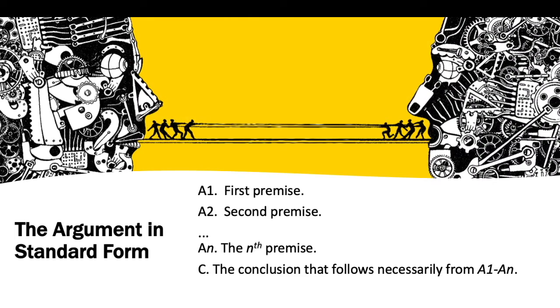If you put the argument in standard form, the result will look something like this. You're going to have the first premise, the second premise, and then the final premise in your argument leading up to the conclusion that follows necessarily from all of the other premises in the argument. So that is an argument in standard form.